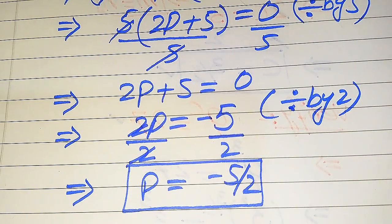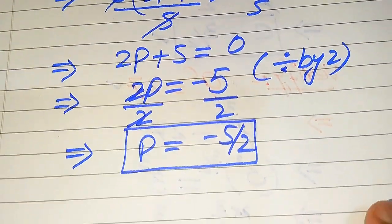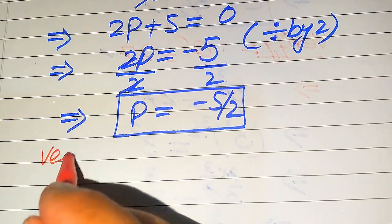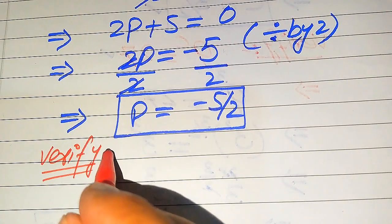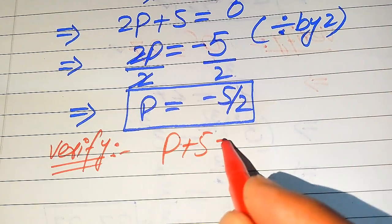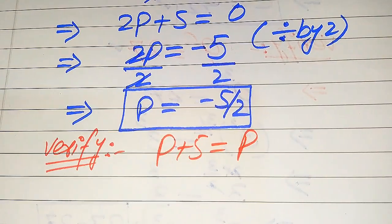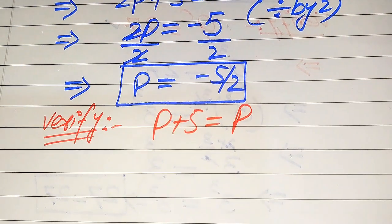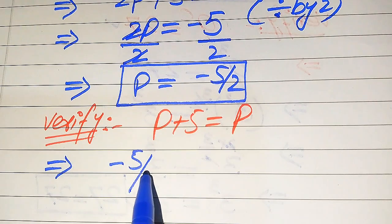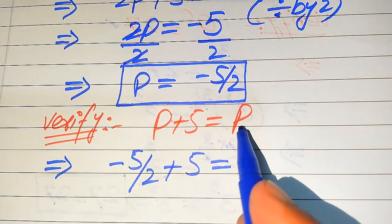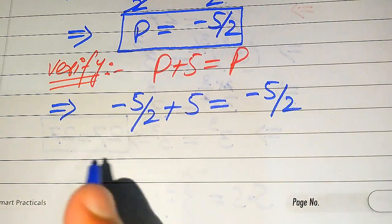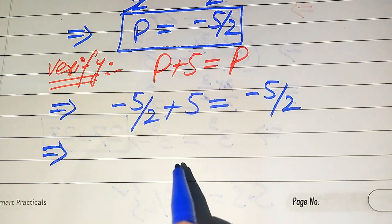We got p = −5/2 from the first method. Now in the next step we verify whether this value of p is a valid solution of the given equation or an extraneous root. We copy down the given equation: √(p+5) = p. We substitute p = −5/2 on both sides, giving √(−5/2 + 5) = −5/2, which simplifies to √(−5/2 + 5) = −5/2. We need a little simplification on the left hand side.